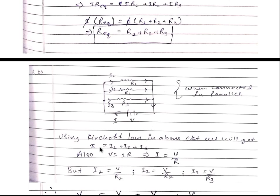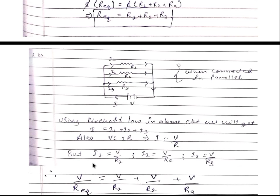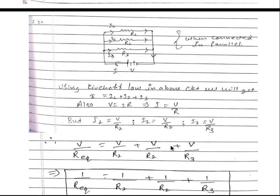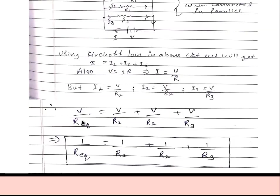Applying Kirchhoff's Current Law, we get I is equal to I1 plus I2 plus I3. As per Ohm's Law, I1 is V divided by R1, I2 is V divided by R2, and I3 is V divided by R3. Substituting these values, we take V common from both sides. V cancels and we get 1 divided by R_equivalent is equal to 1 over R1 plus 1 over R2 plus 1 over R3. This is the formula for resistances connected in parallel.